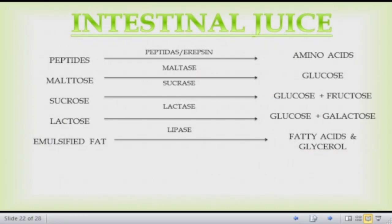Intestinal juice contains erepsin and peptidases. Peptides are converted into amino acids with the help of erepsin. Sucrose is converted into glucose and fructose with the help of sucrase. Lactose is converted into glucose and galactose. Emulsified fat is converted into glycerol with the help of lipase.